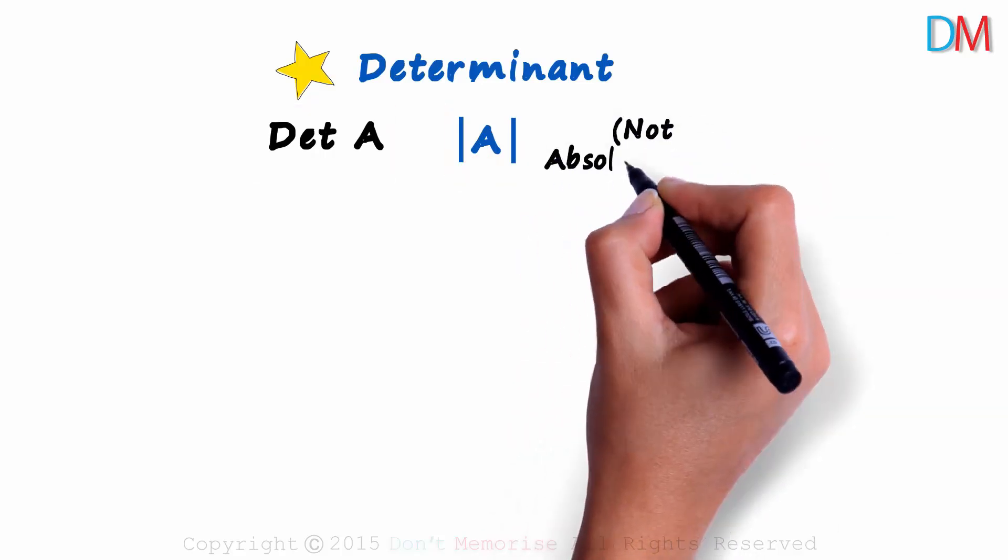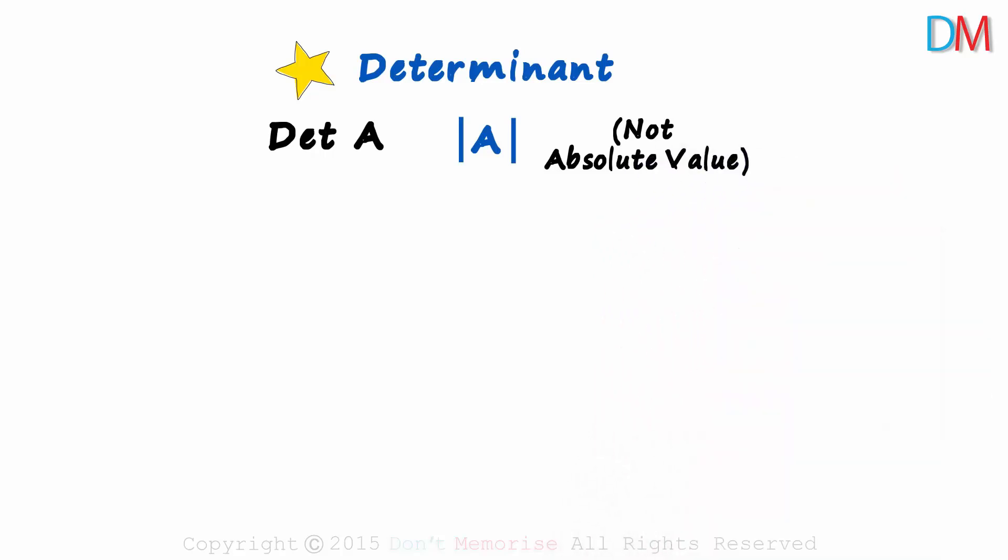Do not confuse this with the absolute value. Every matrix has a determinant and it's unique. The determinant of a matrix is a unique number which can be calculated. It's special because it has a wide range of applications.